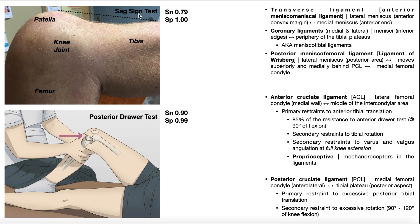Between these two tests, the posterior drawer test has a better sensitivity of 90%, meaning if somebody has a negative posterior drawer test, there's a 90% chance they don't have a PCL tear. The sensitivity of the sag sign test is worse, so if you're looking to simply rule out a PCL tear, use the posterior drawer test. When it comes to ruling in a PCL tear, both have good specificities — the posterior drawer test is 99%, and the sag sign is even better at 100%. If they have a positive sag sign, they have a PCL tear.